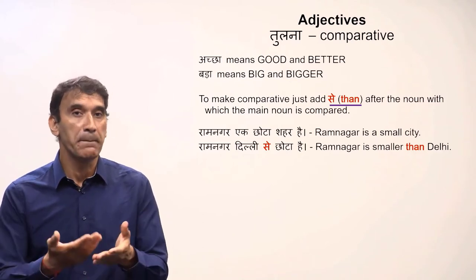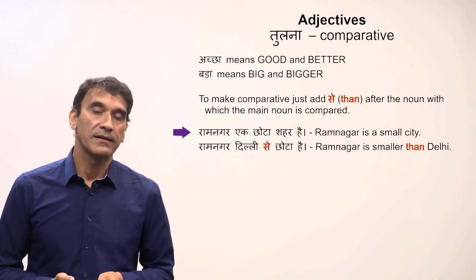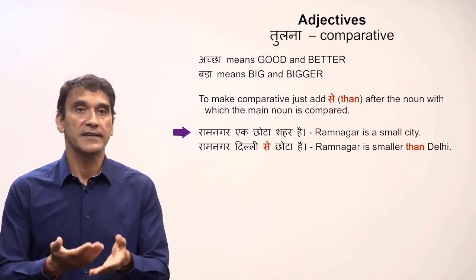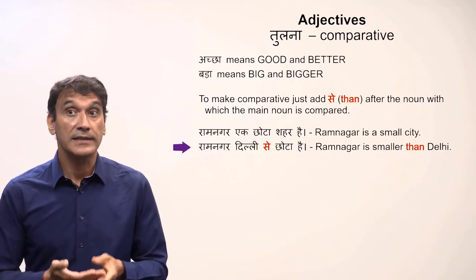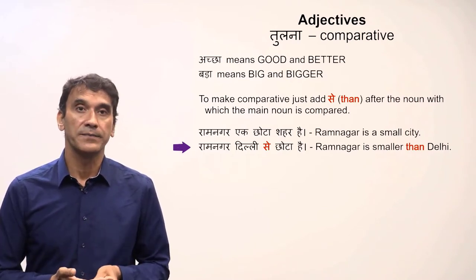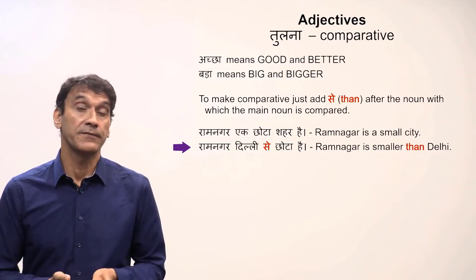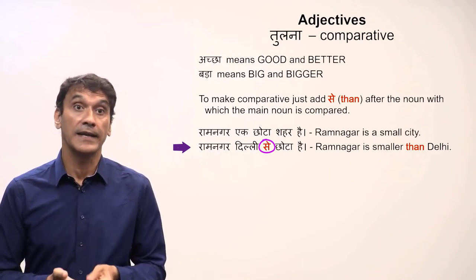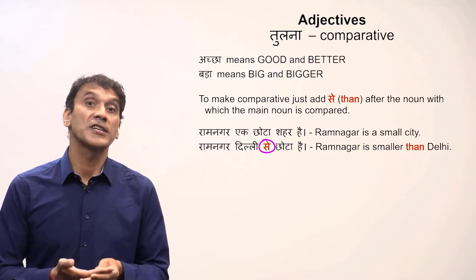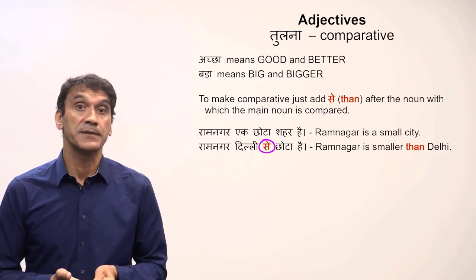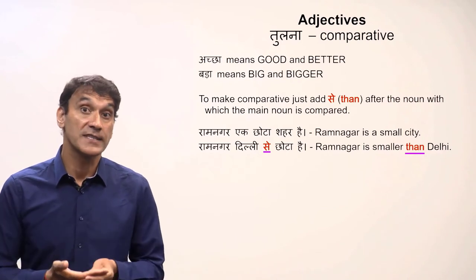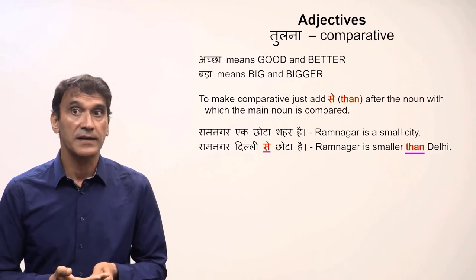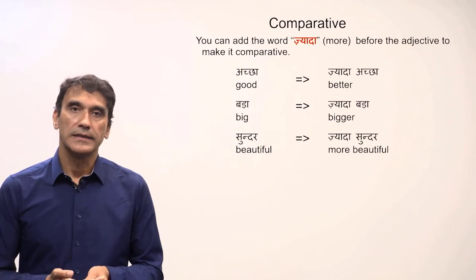Hindi simply uses the postposition 'se' after the noun with which the main noun is compared. For example: 'Ramnagar ek chota shahir hai' — Ramnagar is a small city. Here 'chota' is the basic adjective meaning 'small'. 'Ramnagar Delhi se chota hai' — Ramnagar is smaller than Delhi. In the second sentence, 'chota' functions as the comparative form 'smaller'. The postposition 'se' shows the comparison with Delhi, and it is translated as the preposition 'than' in English.